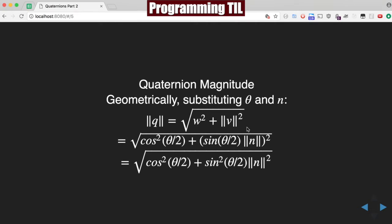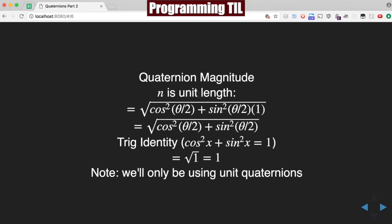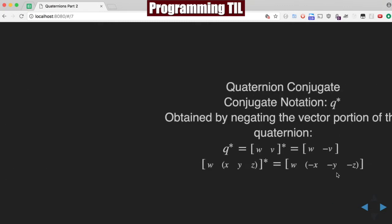Geometrically, substitute theta and n into this. Again, we're going to have w is cosine theta over 2, and v is going to be sine theta over 2 times the magnitude of n. Recalling that n is a unit length of 1, so we can get rid of that. And we can use the trig identity: cosine squared x plus sine squared x is equal to 1. So the square root of 1 is obviously 1. So we'll be using unit quaternions for this.